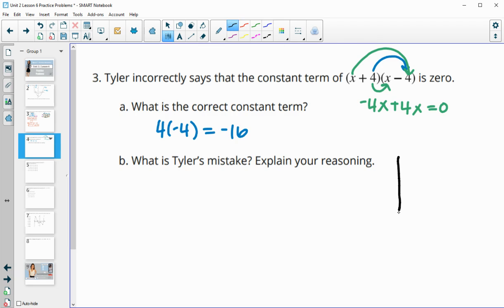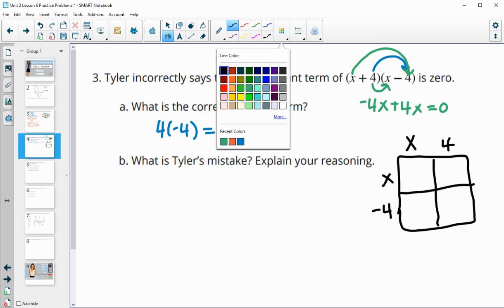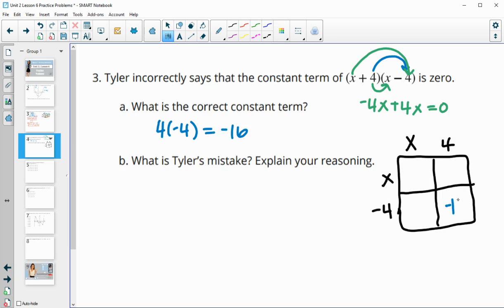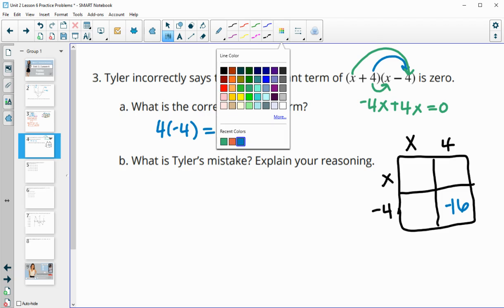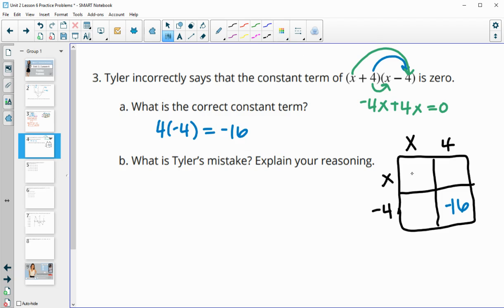Another way to look at this is by looking at it in the box. If we had the x plus 4 on top and the x minus 4 on the side, here's where those terms are coming from. So negative 4 times 4 is that negative 16. And then x times 4 gives us 4x. And then negative 4 times x gives us negative 4x. So those like terms are what's going to give us 0, not the constant term.